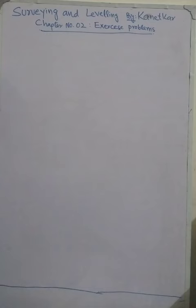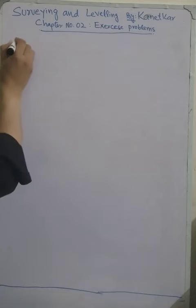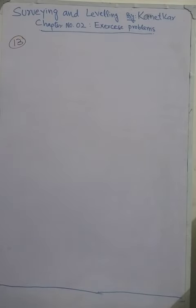In this video we will discuss different numerical problems from chapter number two on chaining and leveling. Problem number 13 states that the distance between two points measured with a 30 meter chain was recorded as 216 meters. It was afterward found that the chain was 10 centimeters too long. What was the true distance between the points?